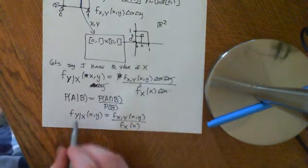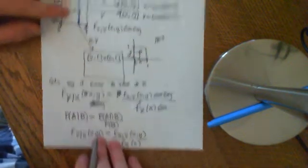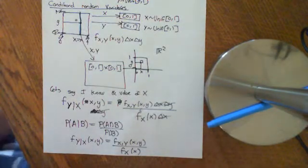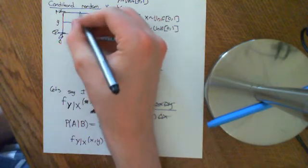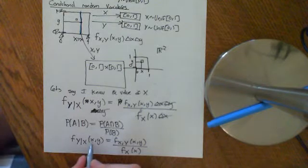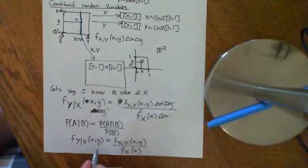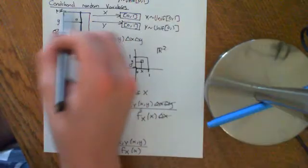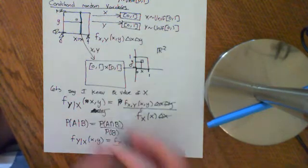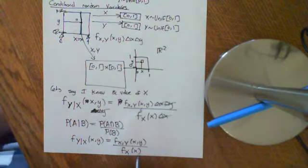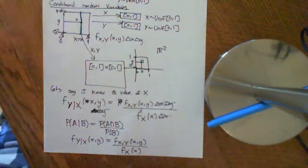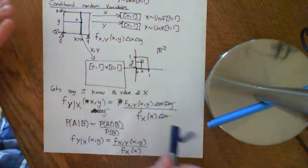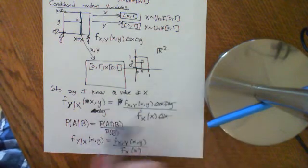So the conditional PDF of Y given that X has occurred, as a function of x and y, is equal to the joint PDF of X and Y as a function of little x and little y, divided by the marginal distribution of X as a function of x. Given that big X takes on a certain value little x, the conditional PDF tells you the probability density for getting a certain y-value — all expressed as probability density functions, which is why you multiply by delta x to convert them from densities to actual probabilities.